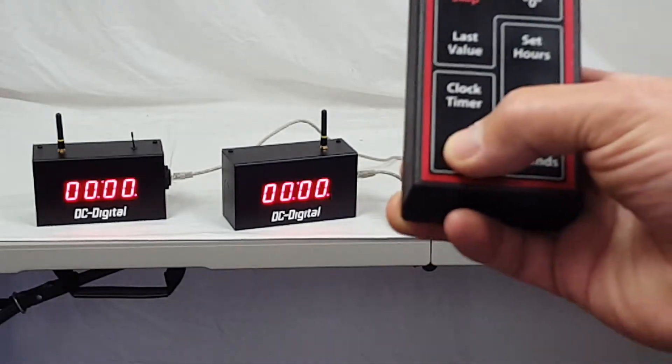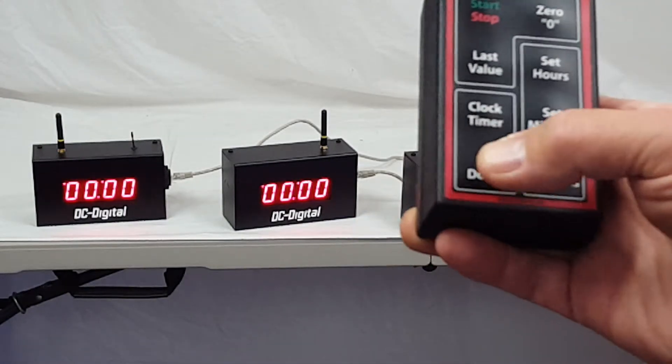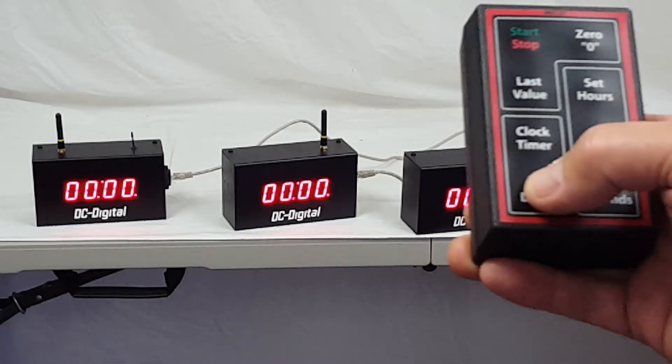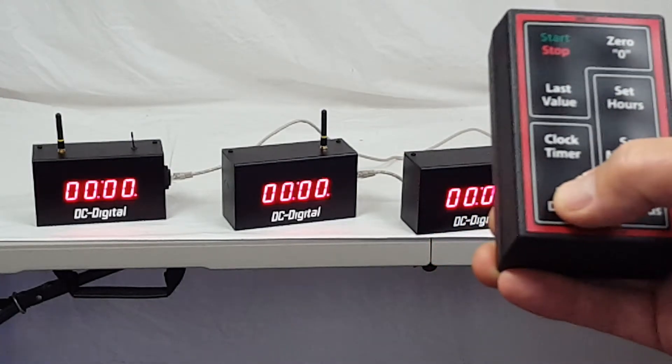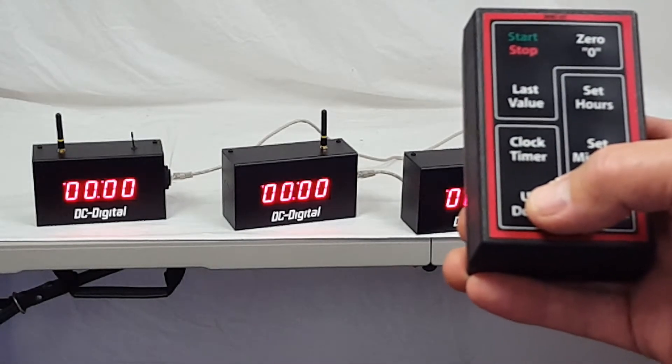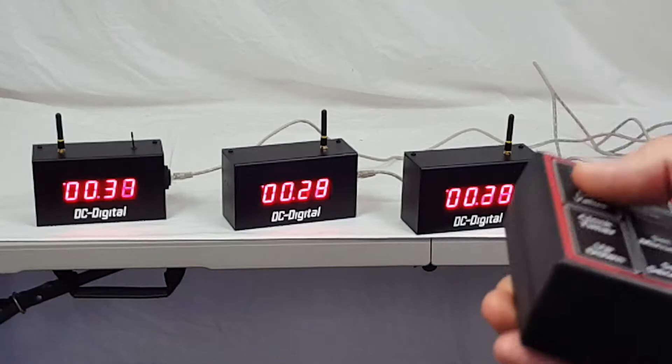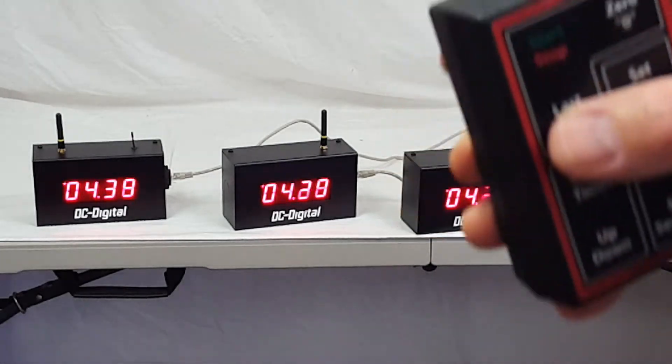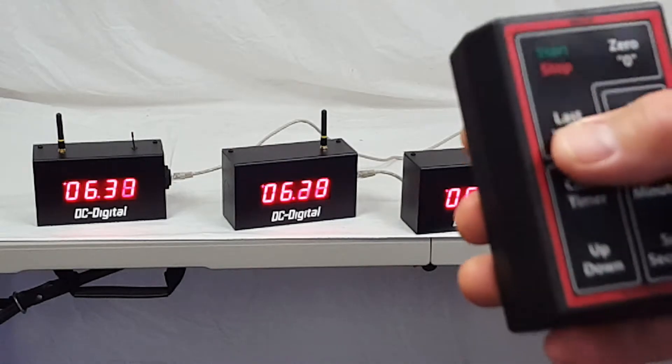I'm going to switch it to up, count up, so I'm going to hit the up-down button on the controller. You can see it toggling back and forth. So we have a count up timer. I'm going to hit start, and as you can see, we have tens hundredths and seconds, and then it shifts over once it gets above 59 seconds.